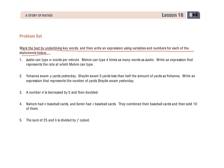So, we'll take a look at one. It says, Justin can type W words per minute. So I'm going to box that one in for myself. Melvin can type four times as many words as Justin. I see this part right here, I know that there's going to be some multiplication. And then my question, or what I have to do, write an expression that represents the rate at which Melvin can type.